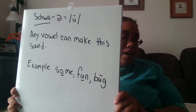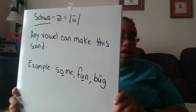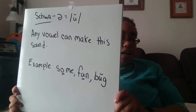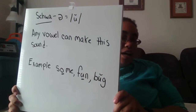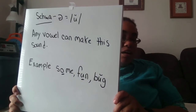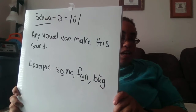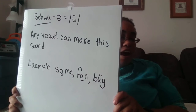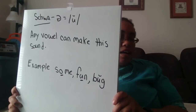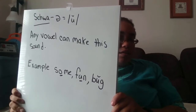Our final word is 'bug.' Again we have a U and it's making the 'uh' sound — our schwa sound. So any vowel can make the 'uh' schwa sound.